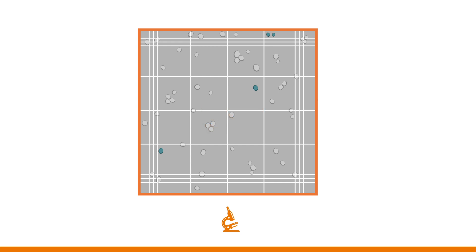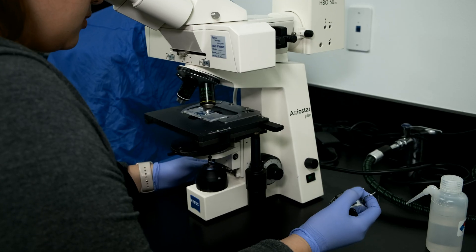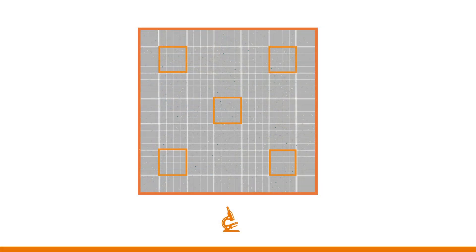At 40x, focus on a single square of the 5 by 5 grid and you will now be able to count the individual cells. You will perform counts on 5 of the 25 squares using a handheld counter. We recommend the 4 corners and the middle square.